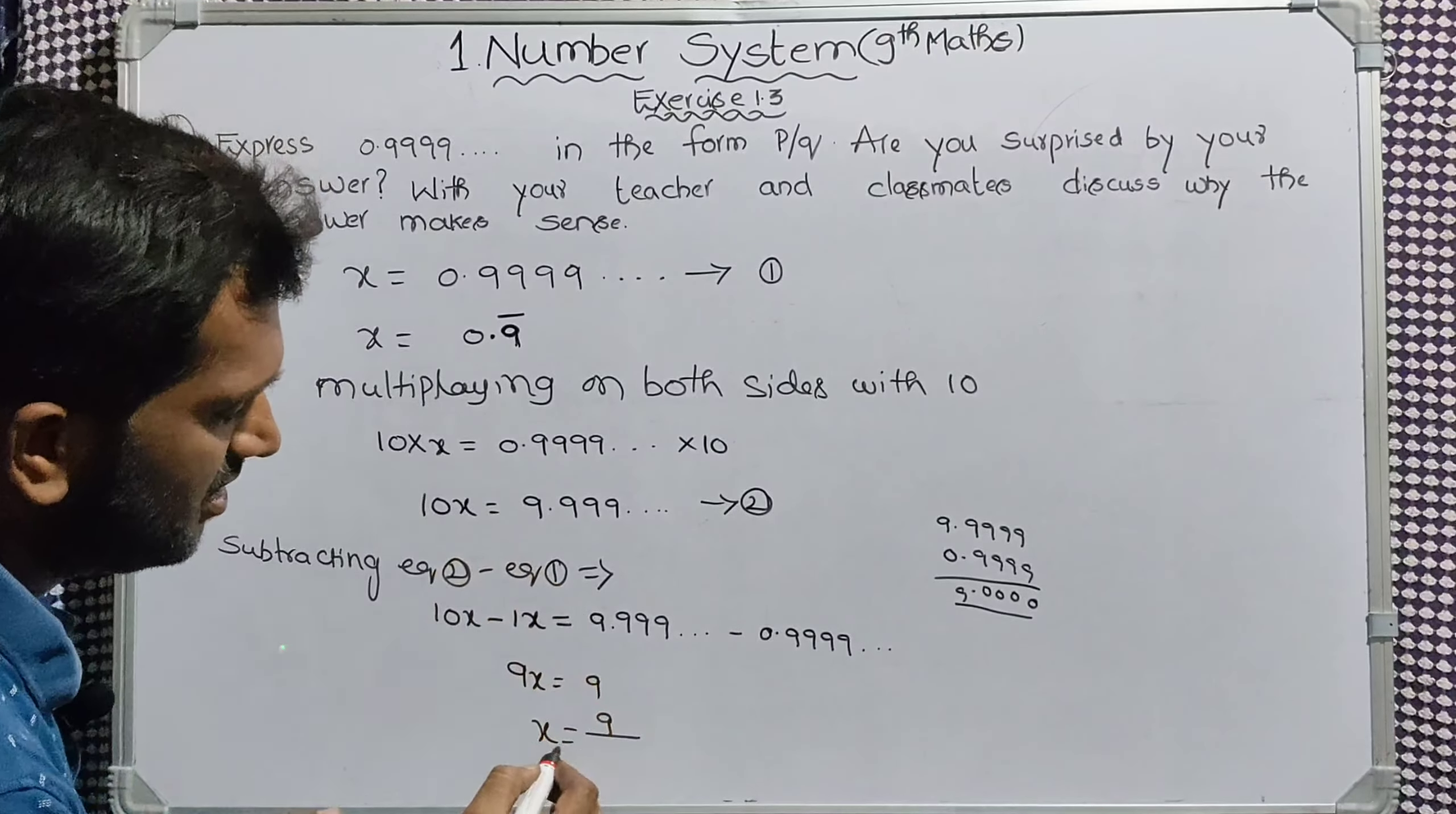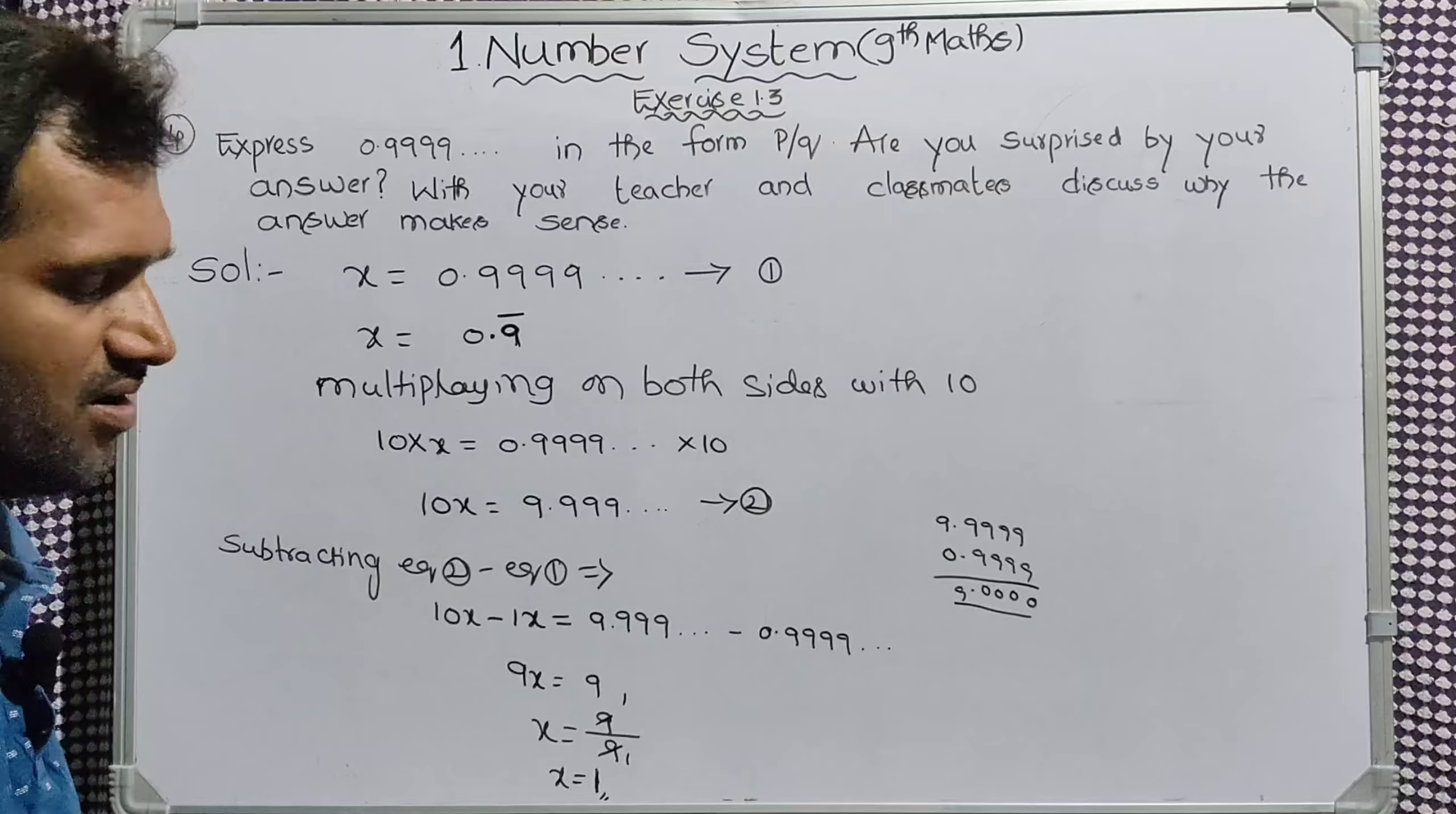9x equal to 9, so x equal to 1. This is the answer. 0.999 is the decimal form. 1 by 1 is the rational form.